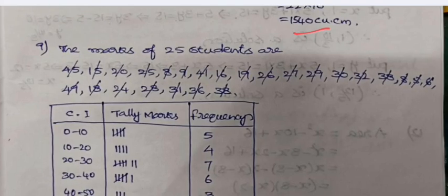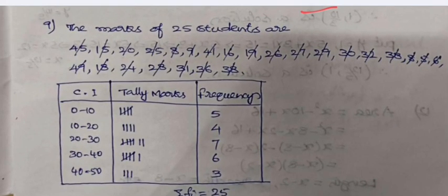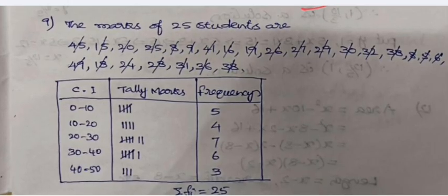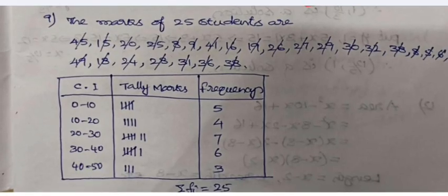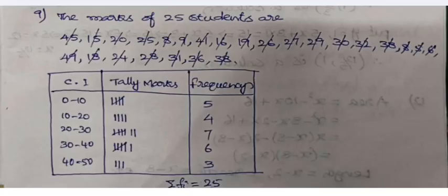The marks of 25 students are given here. We have to take the class interval as 0 to 10, so 0 to 10, 10 to 20, 20 to 30, 30 to 40, 40 to 50. This exam was conducted for 50 marks. By taking tally marks, the frequency distribution table is prepared. 0 to 10 frequency is 5, 10 to 20 frequency is 4, 20 to 30 is 7, 30 to 40 is 6, 40 to 50 frequency is 3, and the sum of all frequencies is 25.